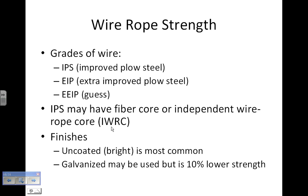Finishes for wire rope: bright, which is not coated, is probably the most common. Galvanized is coated to protect it from corrosion, but the process of galvanizing reduces its strength by 10%.